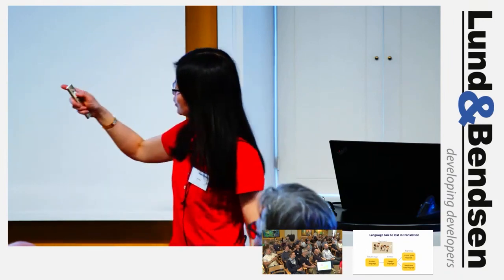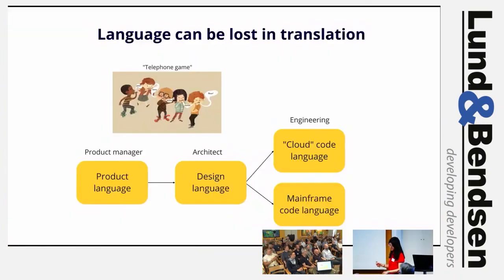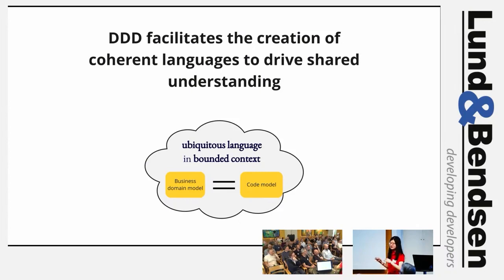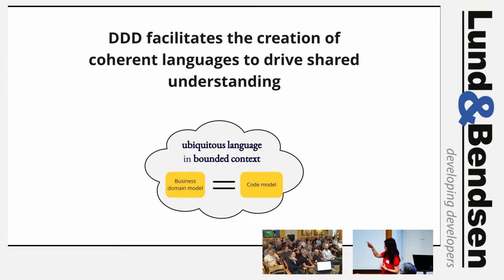Language can also be lost in translation if there's a handoff — top to down, down to up, profession to profession — just like children playing the telephone game. What DDD really wants to facilitate is the creation of a coherent language to drive understanding. The idea is to go to the core of the challenge: if language is the thing that trips us up, let's work with language. Let's make sure the code language mirrors the business language, so the code model never gets divorced from the business domain model — they develop in tandem.